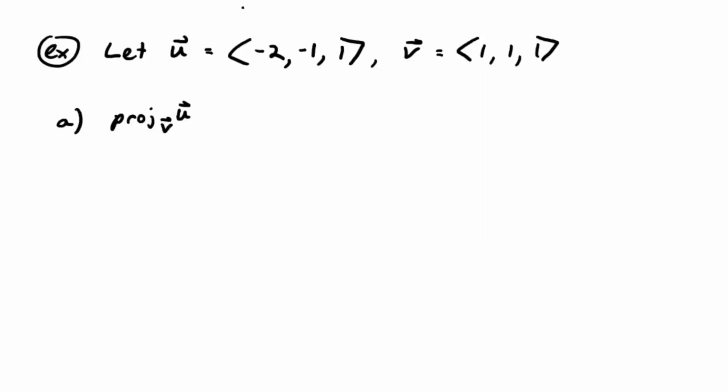In this example, u is the vector negative 2, negative 1, 1, and v is the vector 1, 1, 1.